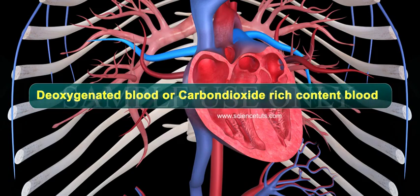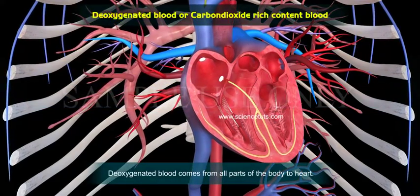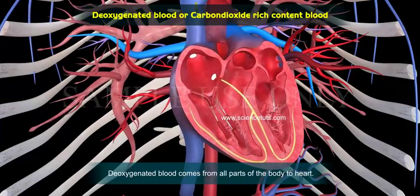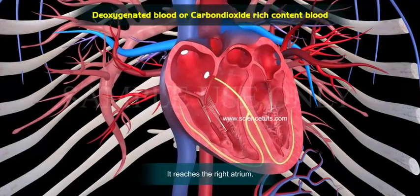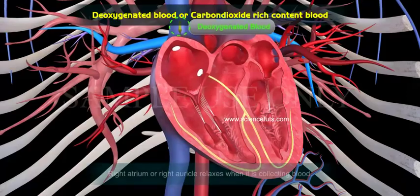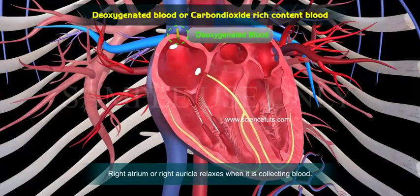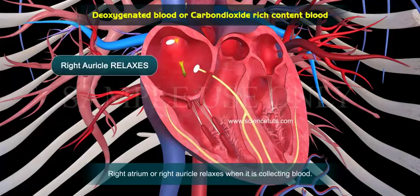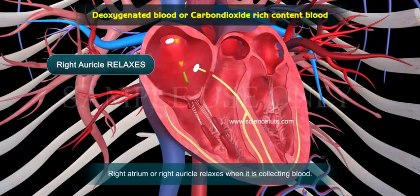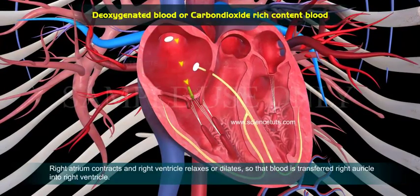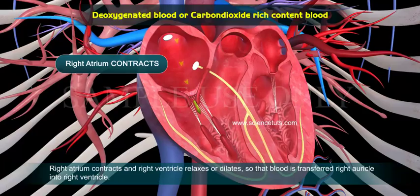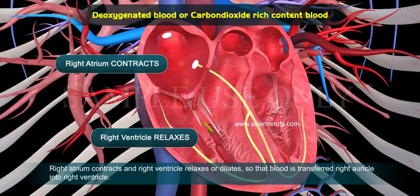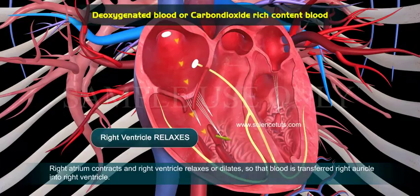Deoxygenated blood, or carbon dioxide-rich blood, comes from all parts of the body to the heart. It reaches the right atrium. The right atrium or right auricle relaxes when it is collecting blood, then the right atrium contracts and the right ventricle relaxes or dilates so that blood is transferred into the right ventricle.